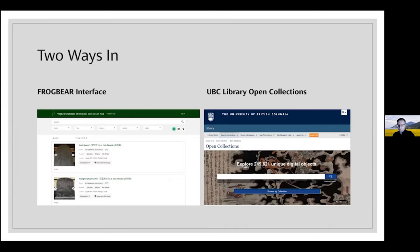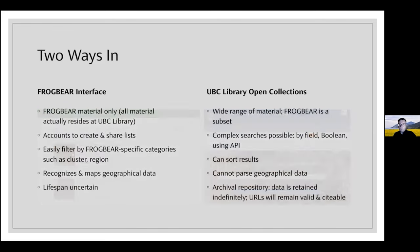On the left is our FrogBear interface, and on the right, the UBC open collections. They're both different ways into our data. Different users might actually use both in different ways for different purposes, but for most people the FrogBear interface will be the way in. The FrogBear interface has access only to FrogBear material, whereas the library has all kinds of other things in it, which means you have to narrow things down sometimes depending on how you come in to search.